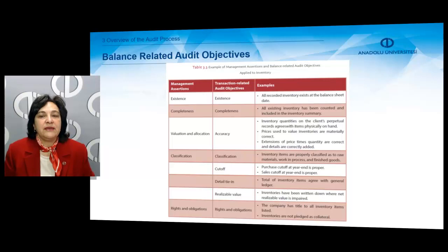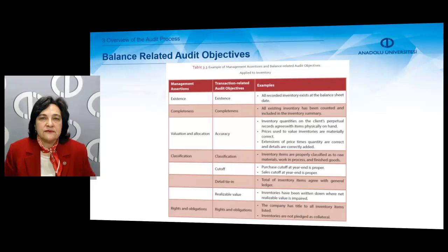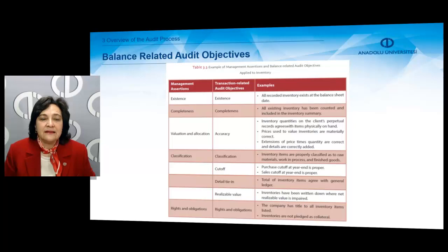Prices used to value inventories are materially correct; extensions of price times quantity are correct and details are correctly added. For classification, inventory items are properly classified as raw materials, work in process, and finished goods. Management assertion has no direct match, but the audit objective is cutoff — purchase cutoff at year-end is proper and sales cutoff at year-end is proper. For detail tie-in, totals of inventory items agree with the general ledger.